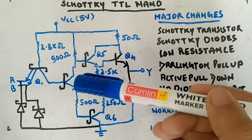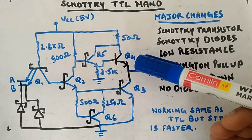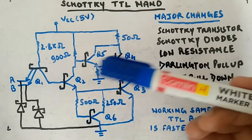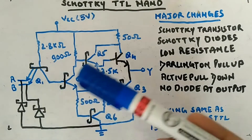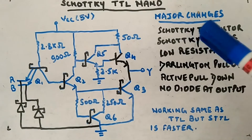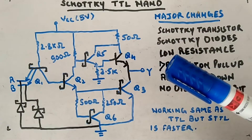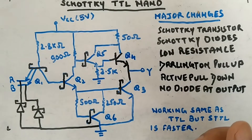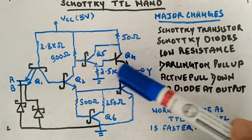I have used a Schottky transistor instead of a normal transistor — you can see the 'S' marking. I'll make sure this Q4 transistor, the last transistor, is not Schottky. The reason behind this is it will never go into saturation — that's the benefit of the Schottky transistor. Here you can see Schottky diodes; the rest of the circuit looks similar. There are some changes — the resistance values are less. I have listed the major changes here compared to the TTL NAND gate you have seen before.